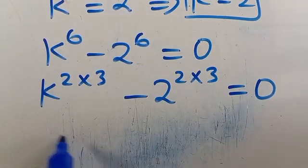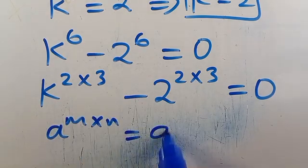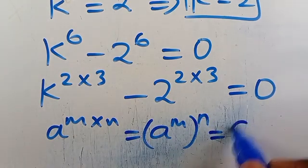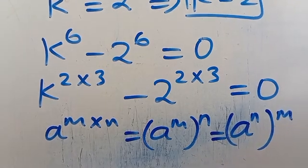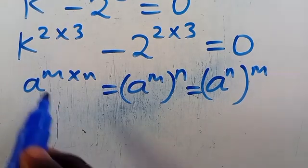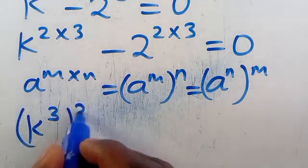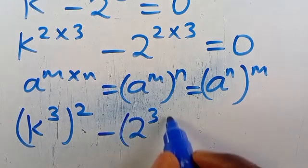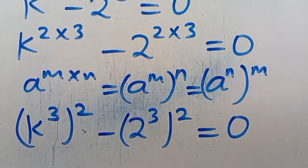Recall that when we have a to the power of m times n, this equals a to the power of m in parenthesis, to the power of n. So from here, we can write this as k to the power of 3, in parenthesis, to the power of 2, minus 2 to the power of 3, in parenthesis, to the power of 2, and set everything equal to 0.